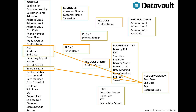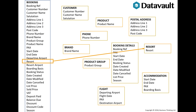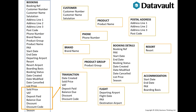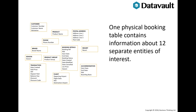There is also accommodation details, resort information, transactional information about the booking, and information about the season. So one physical booking table contains information about 12 separate entities of interest.